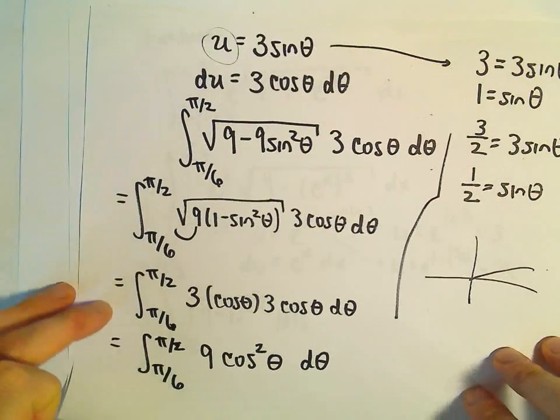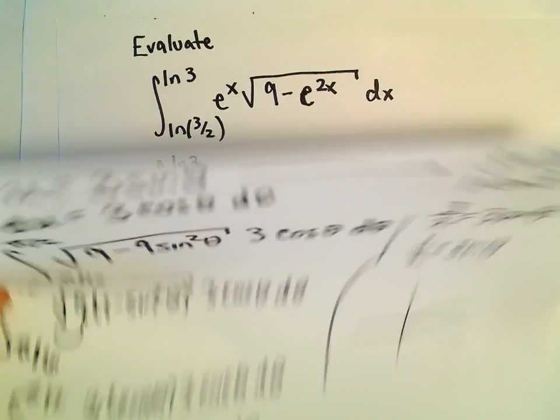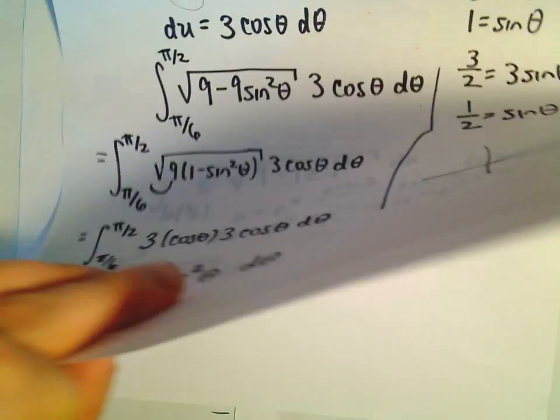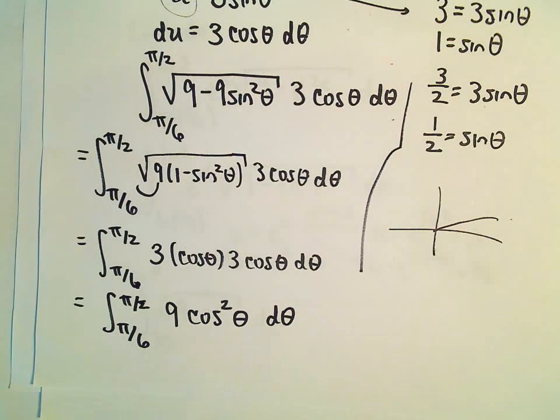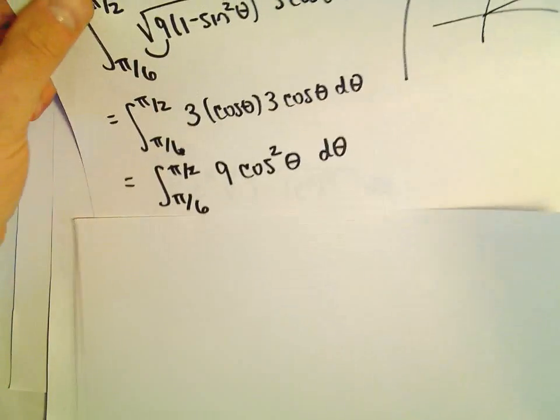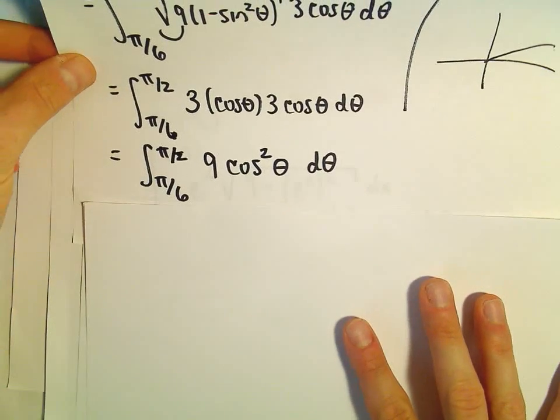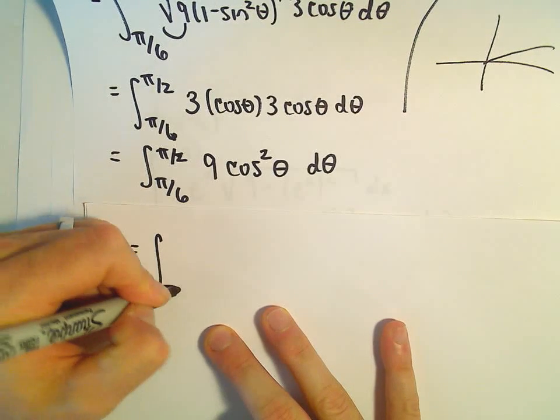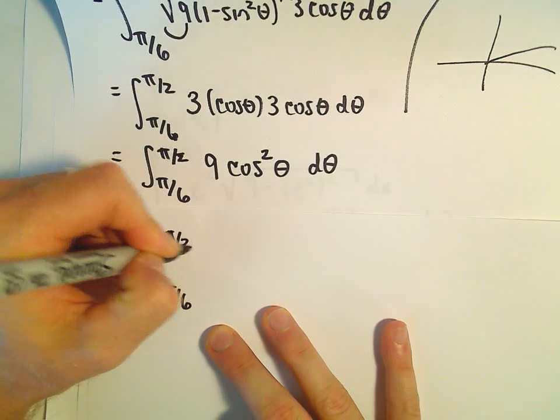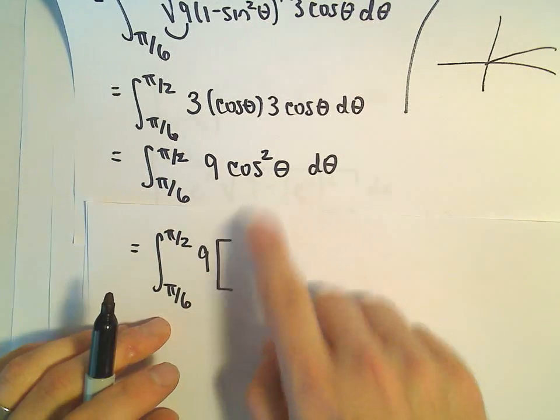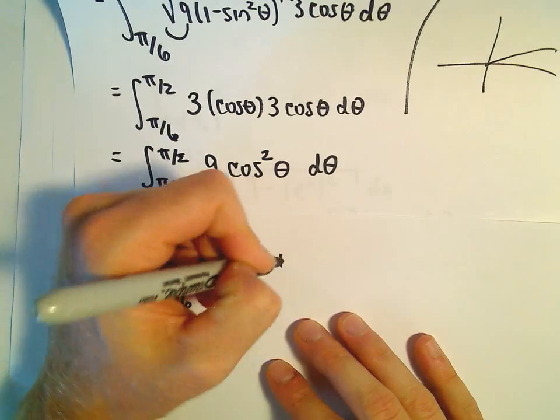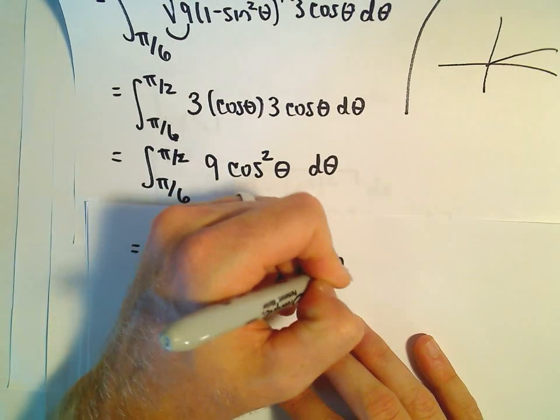Now the question is, how do we integrate cosine squared? Recall for this one, we have to use another trig identity. Lots of identities and lots of substitutions in this one. Pi over 6 to pi over 2, there's our 9. Recall the identity for cosine squared theta that we're going to use. We use 1 half times 1 plus cosine of 2 theta.